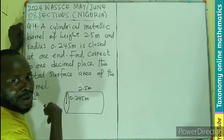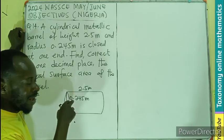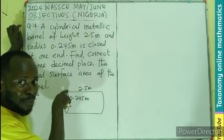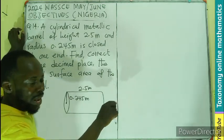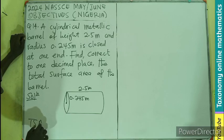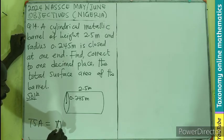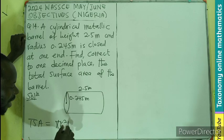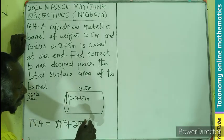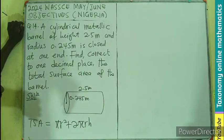The total surface area is going to be the area of the circular part, which is the bottom, plus the curved surface area. So our total surface area is going to be πr² which is the area of the base, plus 2πrh, which is the curved surface area of the rectangular part.